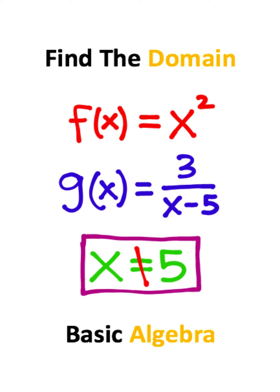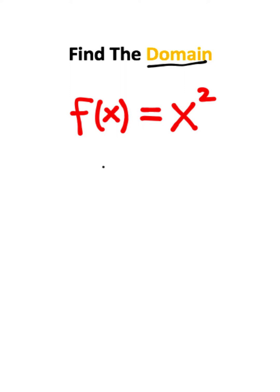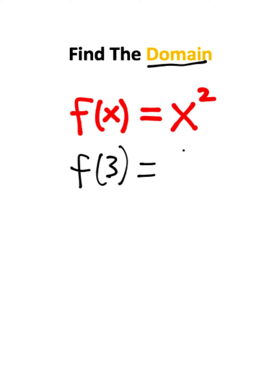Let's talk about finding the domain of a function. Whenever you're trying to find the domain, all it's asking for is what inputs are you allowed to have? So let's try a bunch of inputs. Let's say we have an input of 3. If we plug in 3 for x, we'll have 3 squared. 3 squared is 3 times 3, which is just 9.